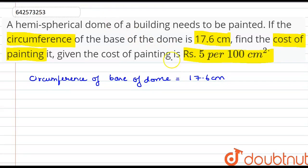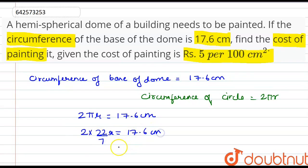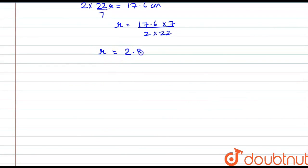We know that the circumference of a circle is 2πr. So we have here 2πr equals 17.6 cm. That means 2 into 22 by 7 into r is 17.6 cm. So we have the value of r here as 17.6 into 7 divided by 2 into 22. The value of r comes out to be 2.8 cm.